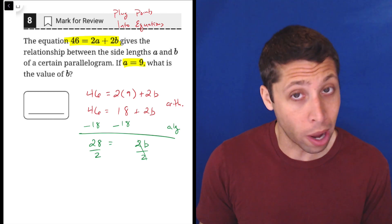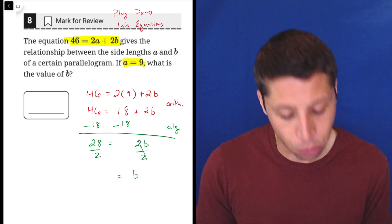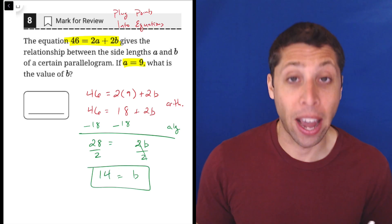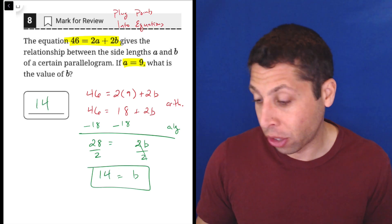2 divided by 2 is 1. So now all we have on the right side is 1B, so just B. And then 28 divided by 2 is 14. And that is our final answer for this question.